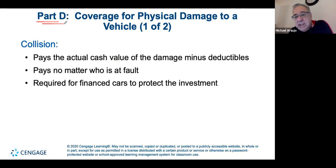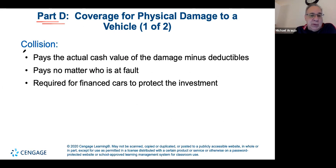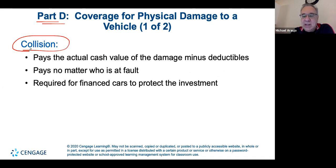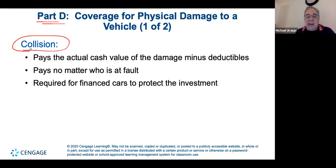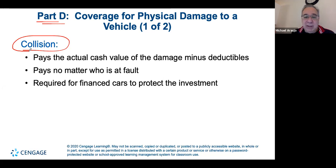There are also physical damage coverages like collision and comprehensive. You don't want limited collision — some policies offer limited collision for less money, but you have to prove you weren't at fault for the physical damage. It's not worth the extra hassle. If you took a left turn and an accident occurred, 99.9% of the time it's going to be the fault of the driver who took the left turn.